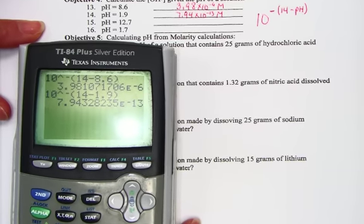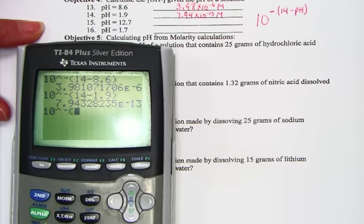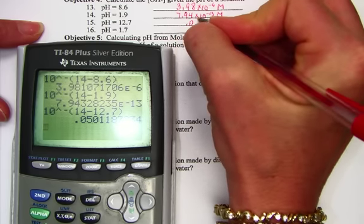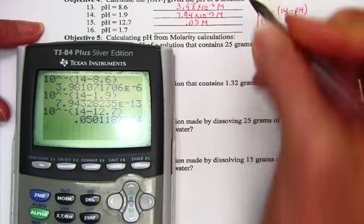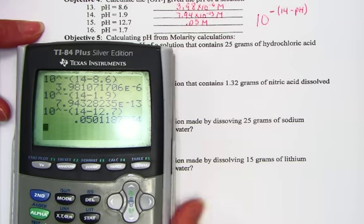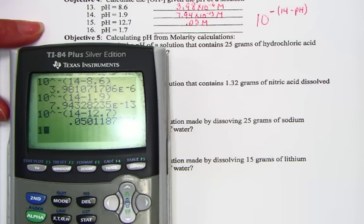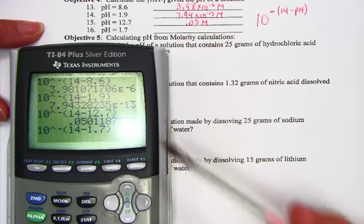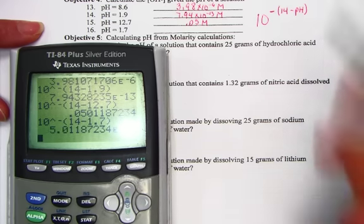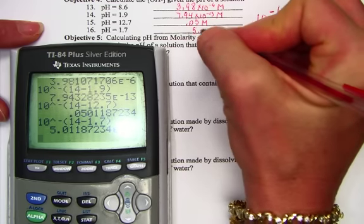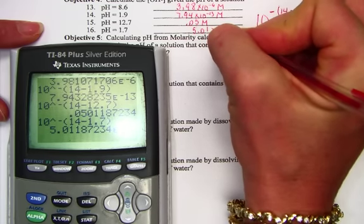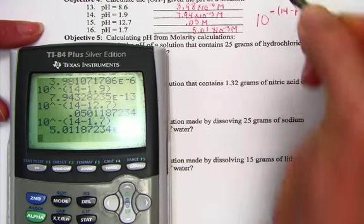In number 15, 10 raised to the negative, 14 minus 12.7. I find 0.05 molar units. And one more for number 16. Same strategy, 10 raised to the negative, 14 minus 1.7. Again, inside the parenthesis, what we're doing is changing pH into pOH and pulling out the hydroxide value, 5.01 times 10 to the negative 13th molar units.